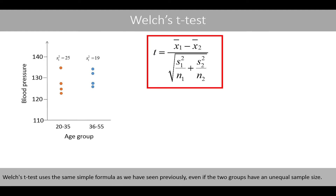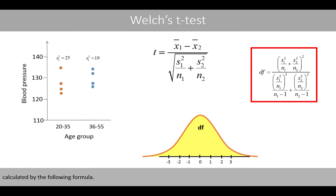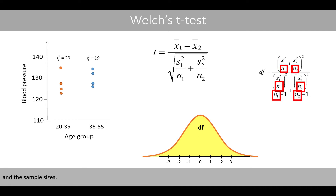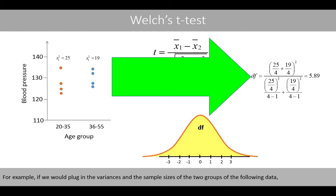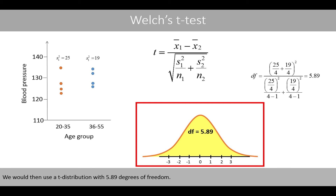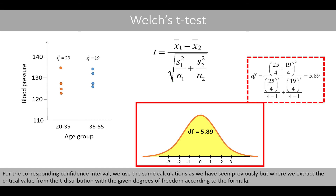Welch's t-test uses the same simple formula as we have seen previously, even if the two groups have an unequal sample size. The difference is that Welch's t-test uses a t-distribution with degrees of freedom calculated by a specific formula based on the variances of the two groups and the sample sizes. For example, plugging in the variances and the sample sizes of the two groups gives degrees of freedom equal to about 5.89. We then use the t-distribution with 5.89 degrees of freedom. The p-value is calculated as the area in the two tails defined by the t-statistic, and the confidence interval uses the same calculations with a critical value from this t-distribution.